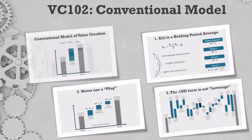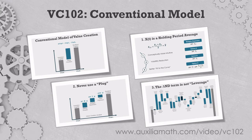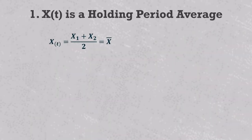To make the conventional value bridge work as well as possible and to set us up for the more interesting value creation models to follow, we should fix a few things that cause analysts a lot of trouble. There are three rules that, if we follow them, will make our models more rigorous and less volatile. The first point is that the X sub T terms — the ones for the holding period EBITDA or valuation multiple — should always be holding period averages, which I represent with over bars.